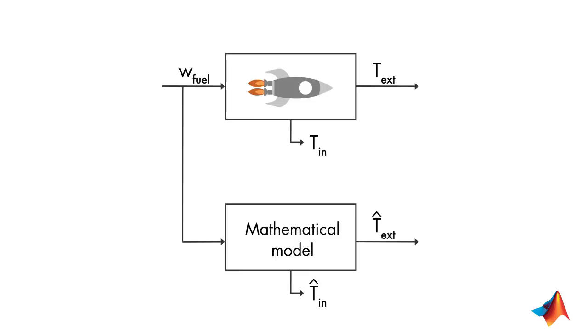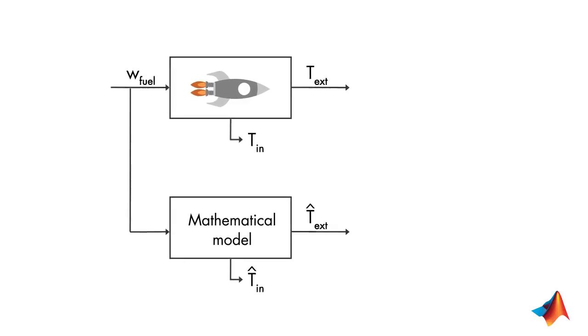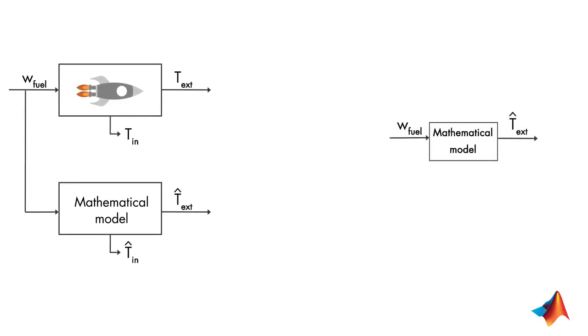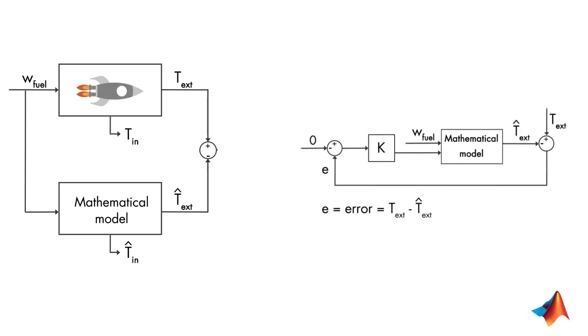Let's see how a state estimator works. Here, our goal is to match the estimated external temperature with the measured external temperature. We know that if these two are equal, then the model will converge to the real system. So, the estimated internal temperature will converge to its true value. What we're trying to do is to minimize the difference between the estimated and measured external temperature. Does this sound familiar to you? Actually, we're talking about a feedback control system where we try to control the error between the measured and estimated external temperature at zero using a controller K.